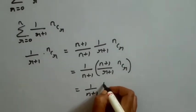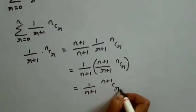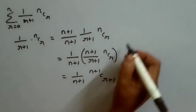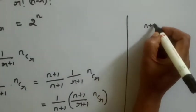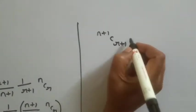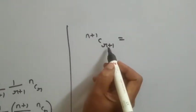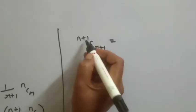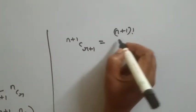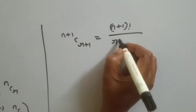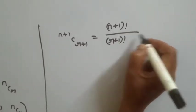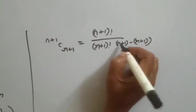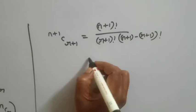We can show that 1 by R plus 1 into NCR equals 1 by N plus 1 into N plus 1 C R plus 1. Using the NCR formula — n factorial divided by R factorial into N minus R factorial — if the value is N plus 1, we get N plus 1 factorial divided by R plus 1 factorial into N minus R factorial, which equals N plus 1 divided by R plus 1 into NCR.